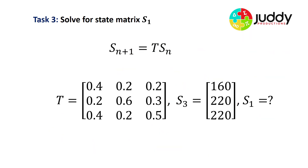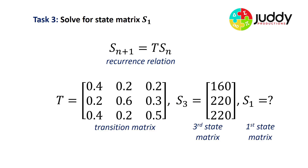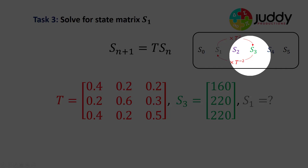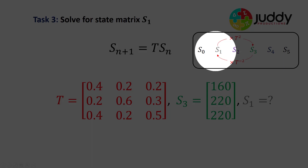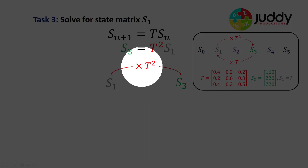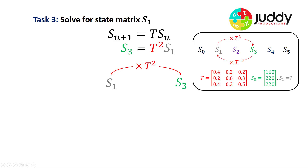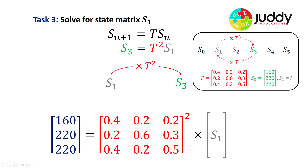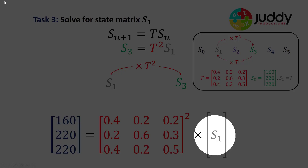Task number three: this time we want to calculate the first state, going back two sequences in our recurrence relation. We have our transition matrix, our third state, and we want to work backwards to the first state matrix. Visually, we're starting at the third and transitioning back to the first — it involves two transitions. To work out the third state, you take S1 and multiply it by the transition matrix squared, effectively having the transition occur twice.